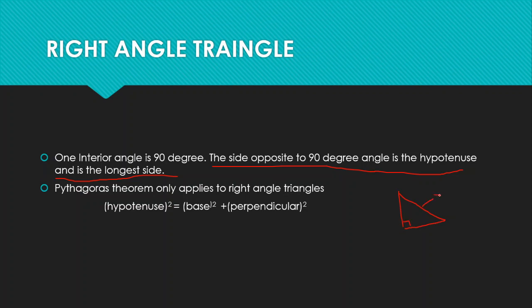This is my hypotenuse because it is the side opposite to the 90-degree angle, and it will always be the longest side. Remember that the Pythagorean theorem only applies to right angle triangles. By the Pythagorean theorem, hypotenuse squared equals base squared plus perpendicular squared.